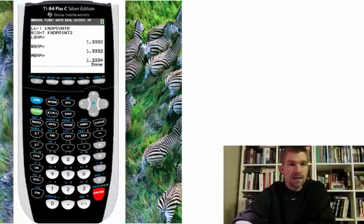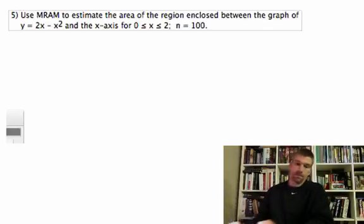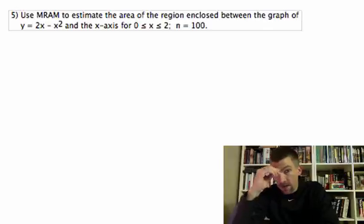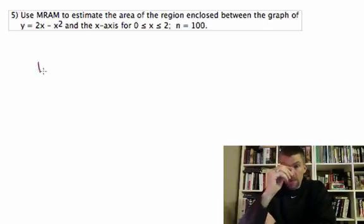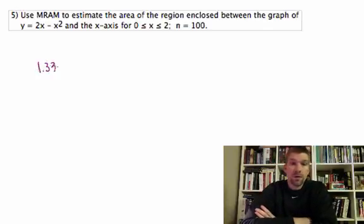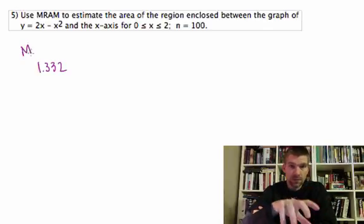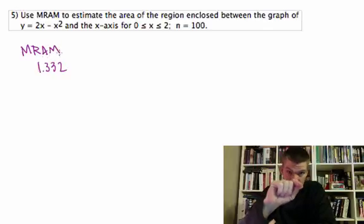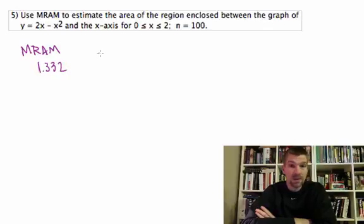You know, it's got to process through and all that kind of stuff. And so when it does, it'll give us LRAM, RRAM, and MRAM. And we're interested in the MRAM part of that. So when you get done with that, you get your MRAM. And for this particular problem, your MRAM is going to sum up 100 rectangles from 0 to 2. It's going to use that midpoint area to find the area, and it's going to be 1.332.